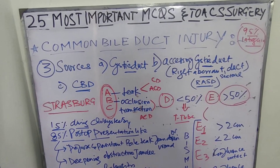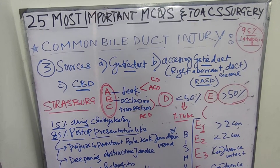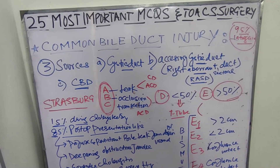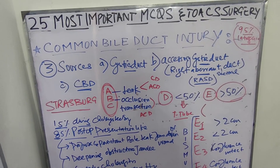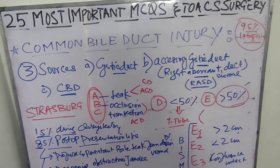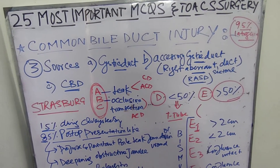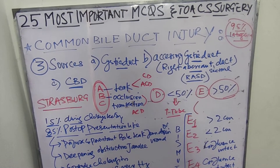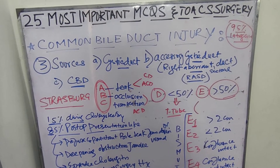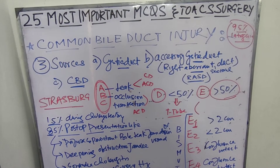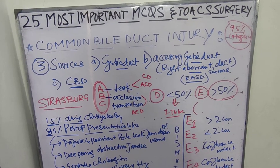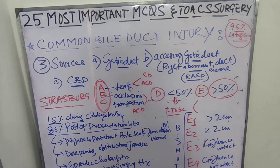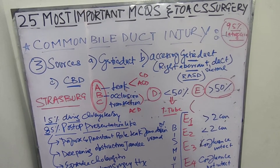Strasberg A, B, C applies only to the cystic duct and accessory cystic duct. To simplify: A is leakage from the cystic duct or accessory cystic duct; B and C are occlusion and transection of the accessory cystic duct. We are not yet dealing with common bile duct injury, which is covered in D and E type injuries.